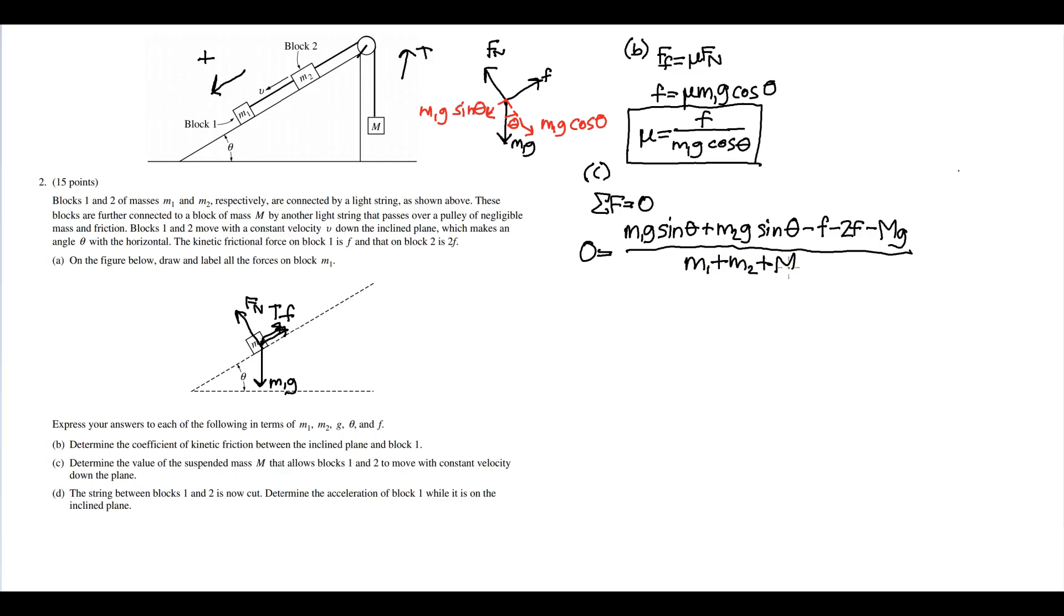So if you multiply both sides by m1 plus m2 plus M, well zero times anything equals zero. So that's m1 g sine theta plus m2 g sine theta minus three f—f minus two f equals negative three f—minus Mg equals zero.